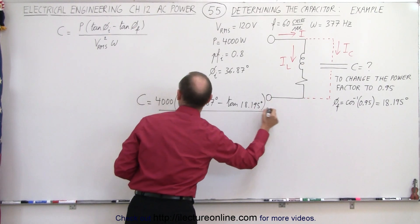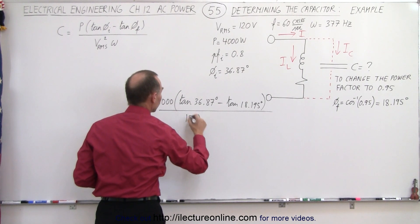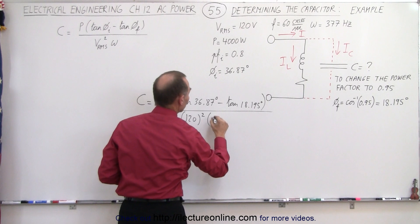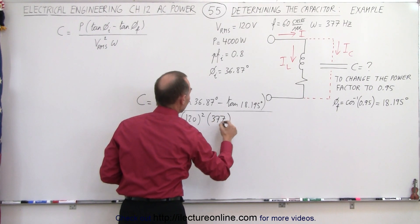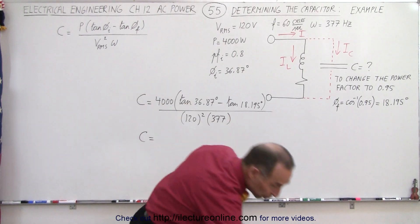And the whole thing divided by the VRMS squared, that would be 120 volts squared, times the omega, the angular frequency of the circuit, of 377 hertz. And that will give us the capacitor required to get that new power factor.